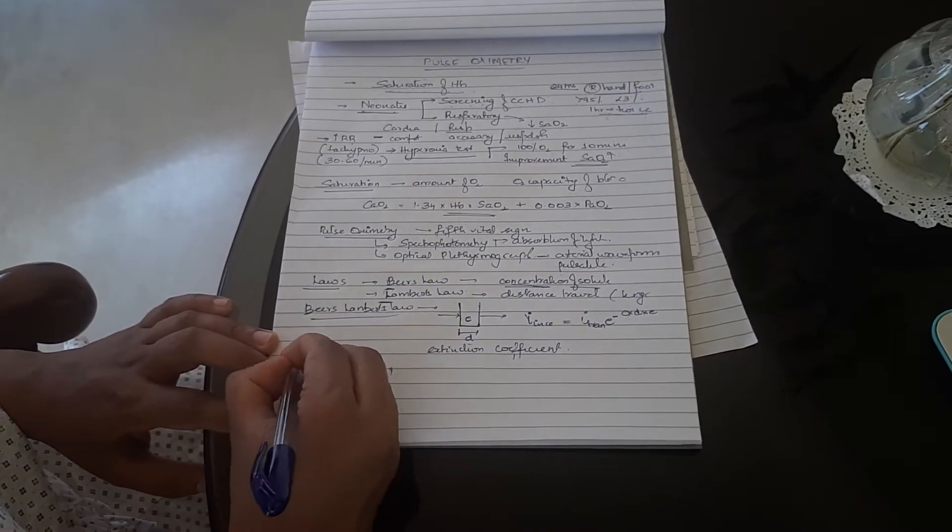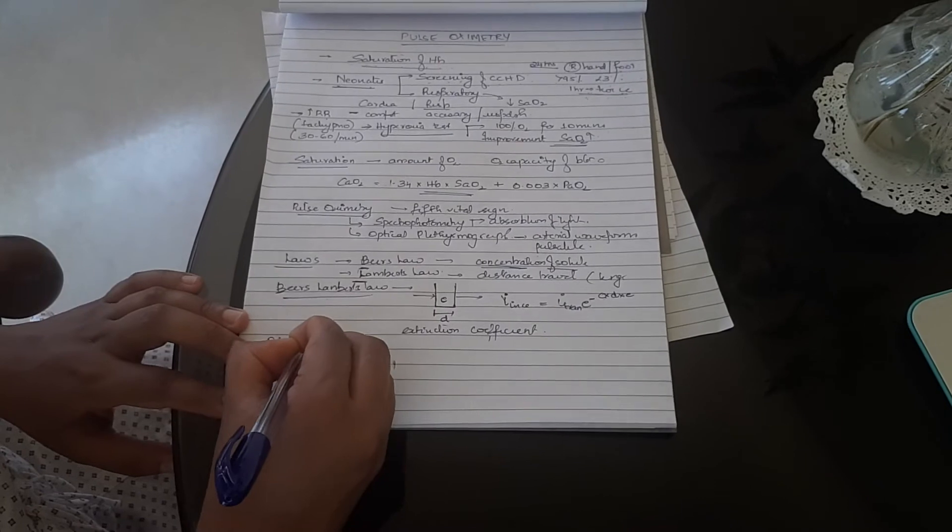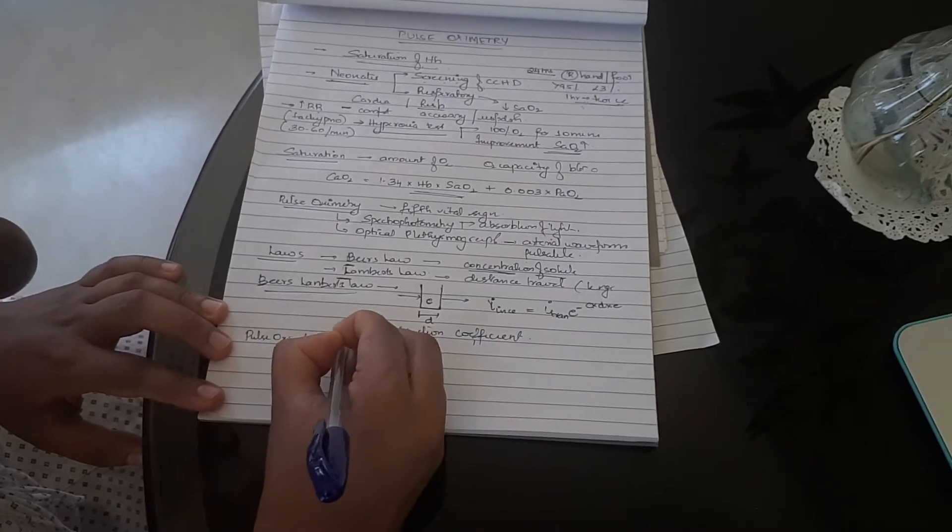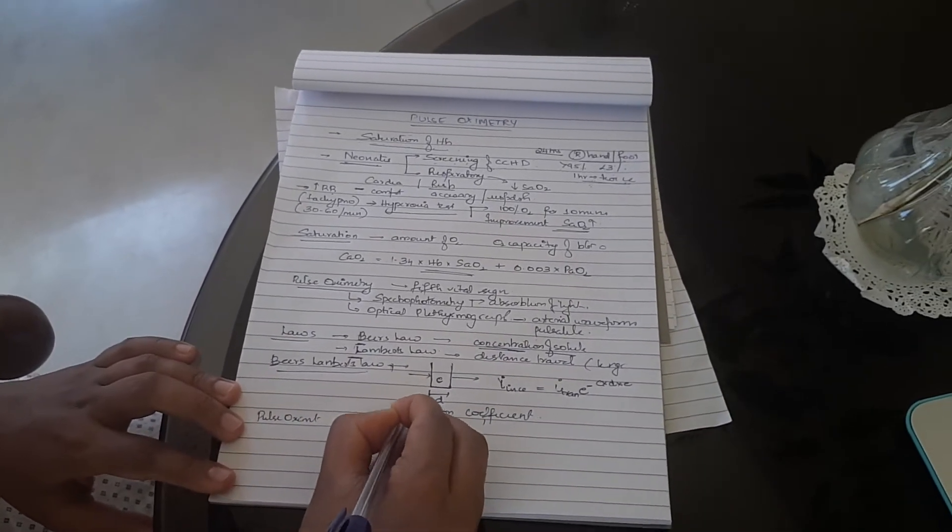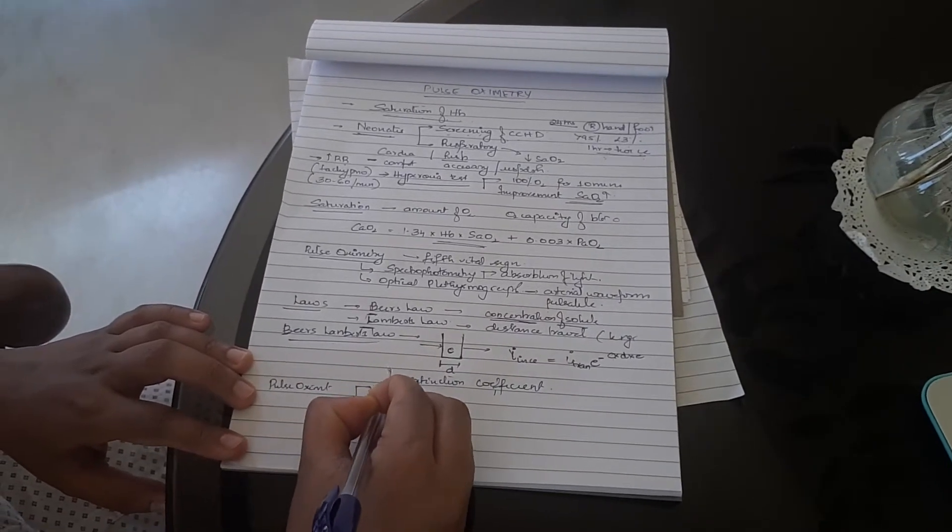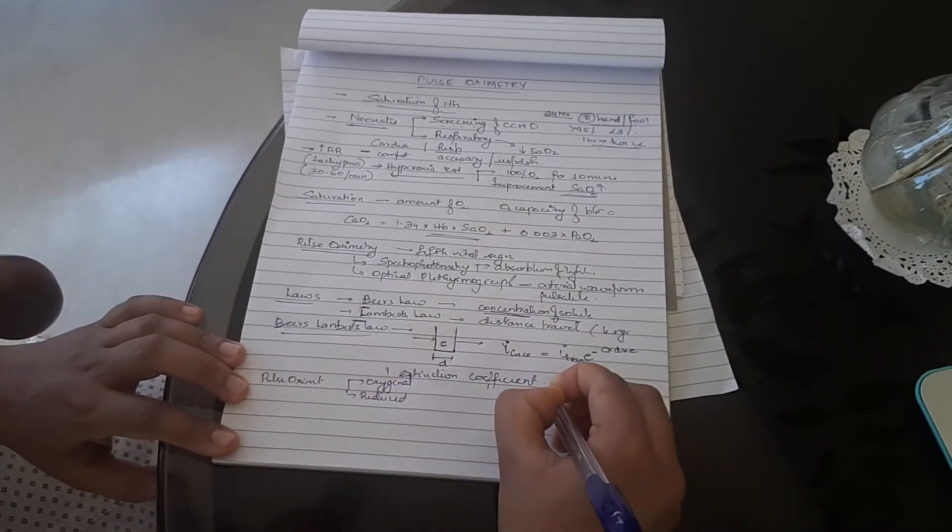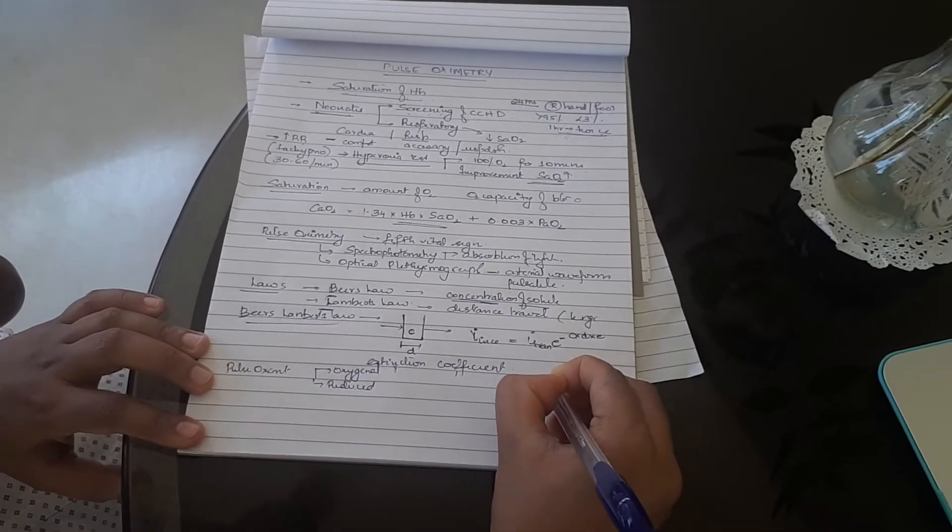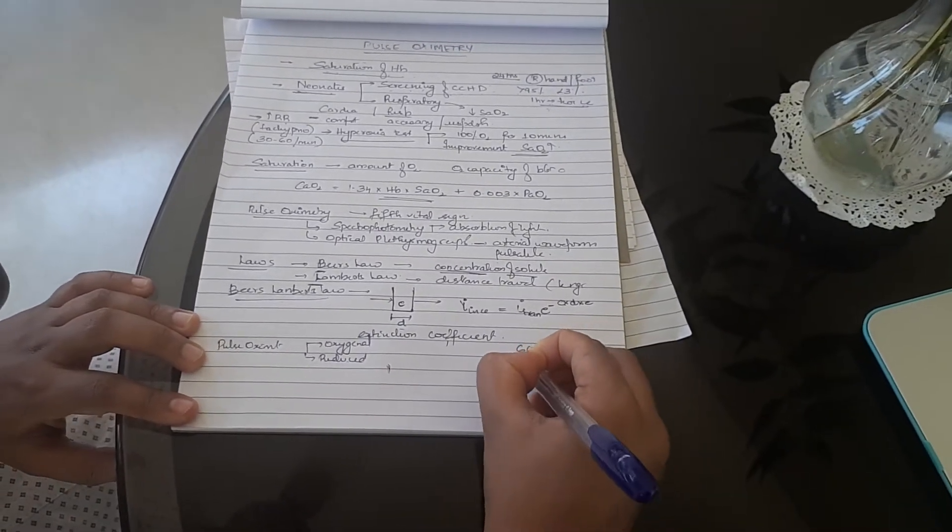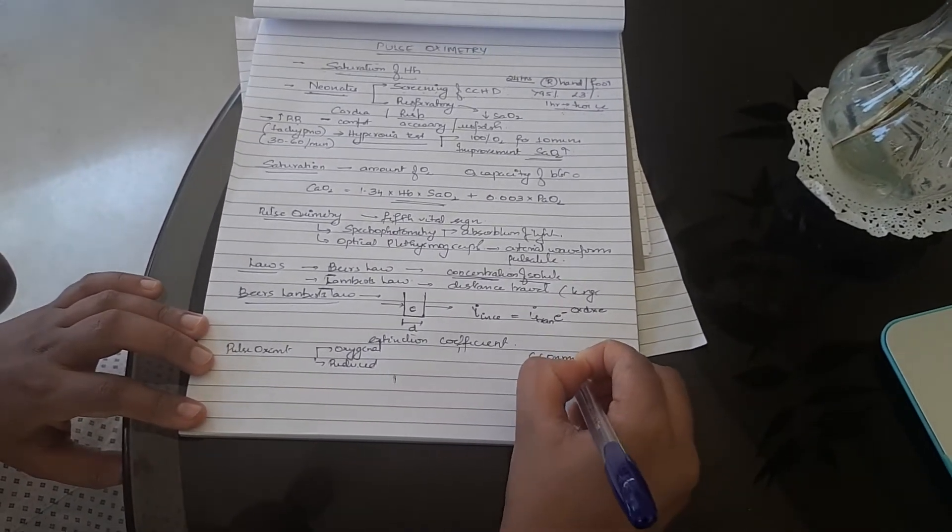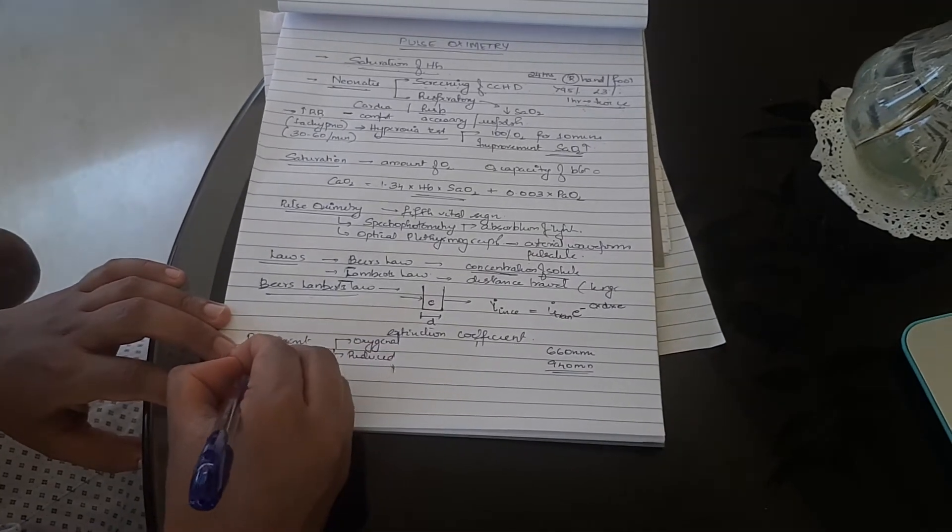Now when it comes to pulse oximetry, what are we bothered about? We are bothered about oxygenated hemoglobin and reduced hemoglobin. For this we use two wavelengths: 660 nanometers and 940 nanometers. Now how do you remember this?